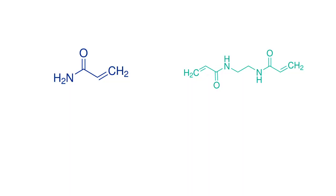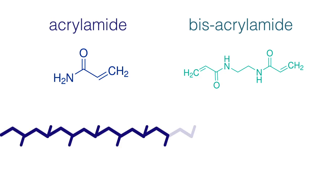To form a gel matrix, a catalyst and polymerizing agent are added to a liquid solution containing two different acrylamide compounds, acrylamide and bisacrylamide. The catalyst and polymerizing agent accelerate the formation of long, single-chain polymers of acrylamide in the solution.